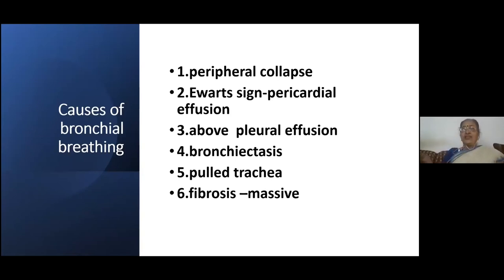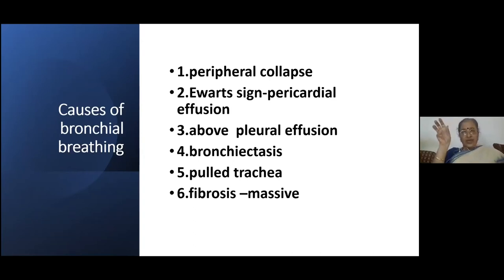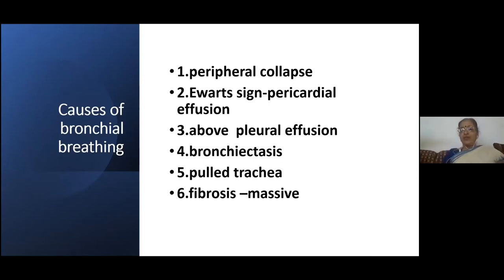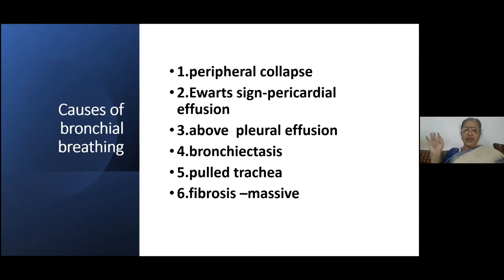Then you can get bronchial breathing — the Ewart sign that you get in pericardial effusion, at the lower end of the scapula on the left side. Above the level of a pleural effusion, the pleural effusion causes a compression collapse of the lung — just above that, because the lung is collapsed there, it looks like consolidation, and you auscultate just above the level of pleural effusion to hear bronchial breathing. Bronchiectasis can give rise to cavitation so you can hear it. Pulled trachea — when the trachea is pulled to one side because of fibrosis — and in massive fibrosis of the lung, like in silicosis and asbestosis, you can get bronchial breathing because of the bronchus being there and the solid fibrotic lung conducting the sound. There are many causes of bronchial breathing, but the principle is the same: there is no alveolar phase, there is a gap, the quality of the respiration changes, and inspiration becomes equal to expiration.